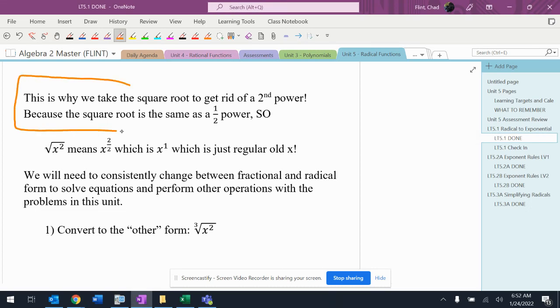So you've probably used the square root, which is actually a radical now that we're understanding this. You've taken a square root to get rid of a second power. Why do we do that?